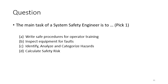Question: The main task of a system safety engineer is to — A, write safe procedures; B, inspect equipment for faults; C, identify, analyze, and categorize hazards; or D, calculate safety risk. According to the System Engineering Handbook, the answer is C: identify, analyze, and categorize hazards.